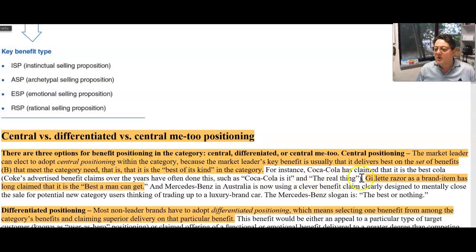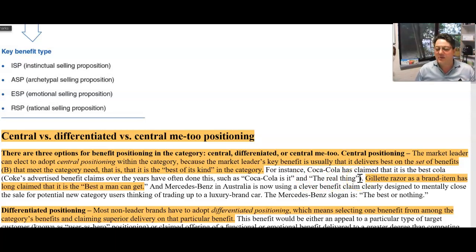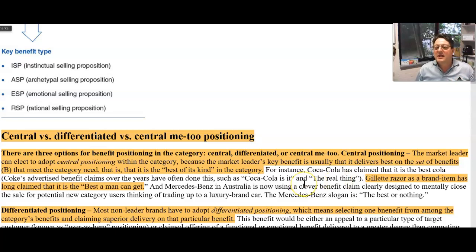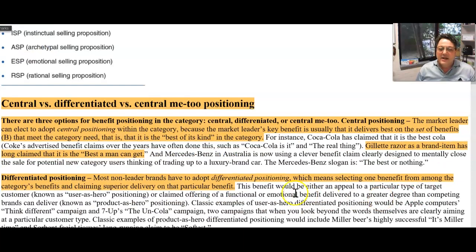In other words, I'm the best of its kind. Coke is it — the real thing. Cadbury chocolate. Gillette: the best a man can get. Mercedes slogan: the best or nothing. Or the ultimate driving machine. These are classic central positioning examples.